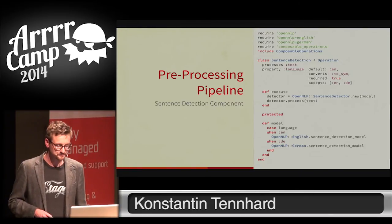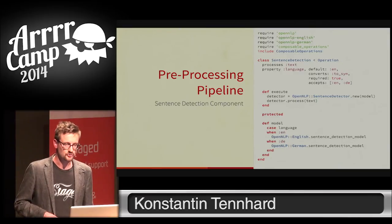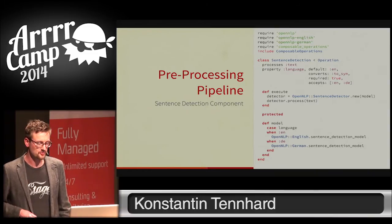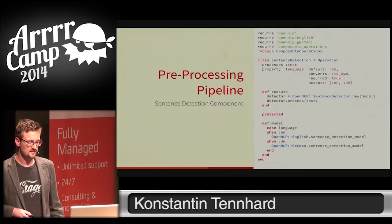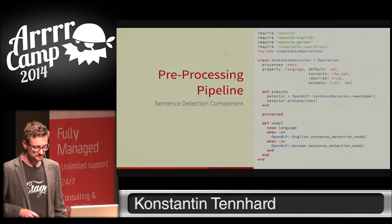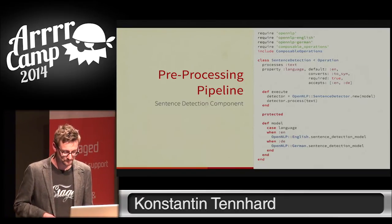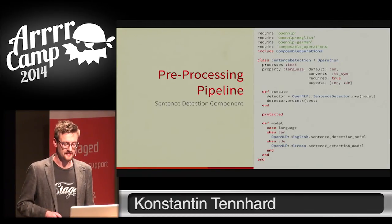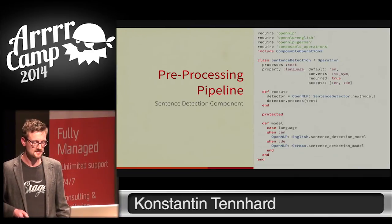An individual component inside a processing pipeline inherits from operation. The call to processes_text can be thought of as similar to attribute accessor. Every operation can have certain properties — in this case, we can tell the sentence detection operation whether it is detecting German or English sentences. The algorithmic core goes into the execute method, which is the only thing you actually need to implement. When the pipeline invokes our operation, it forwards the text and we use the sentence detector to split it into an array of sentences.